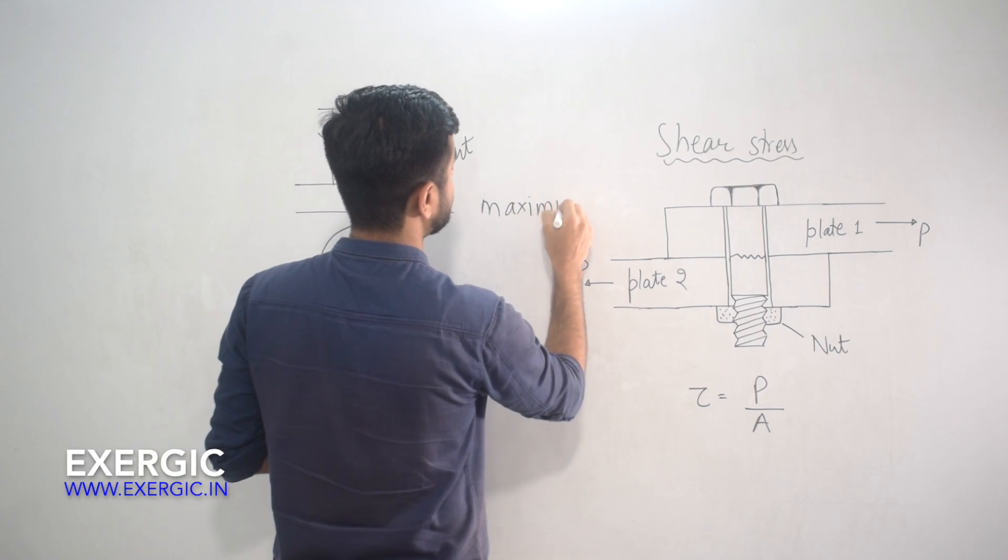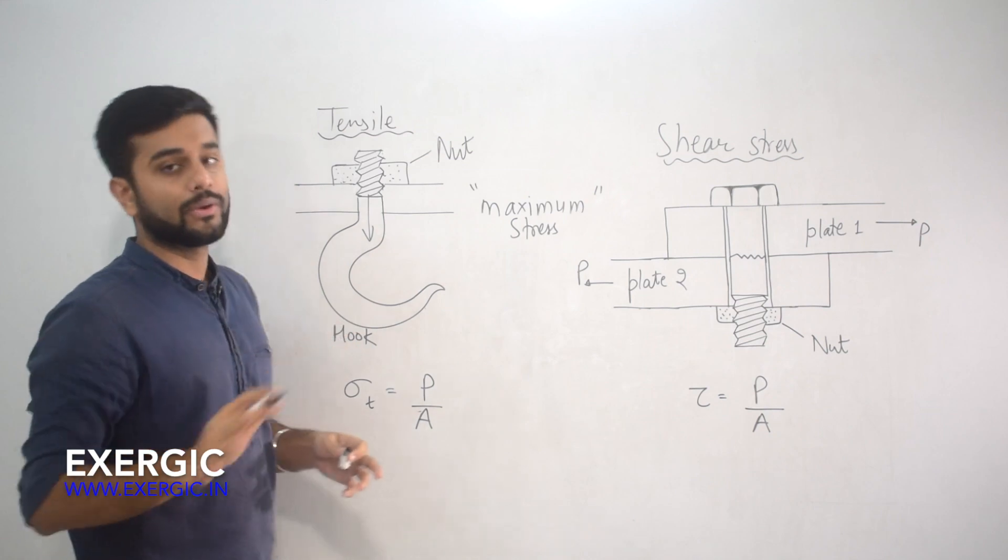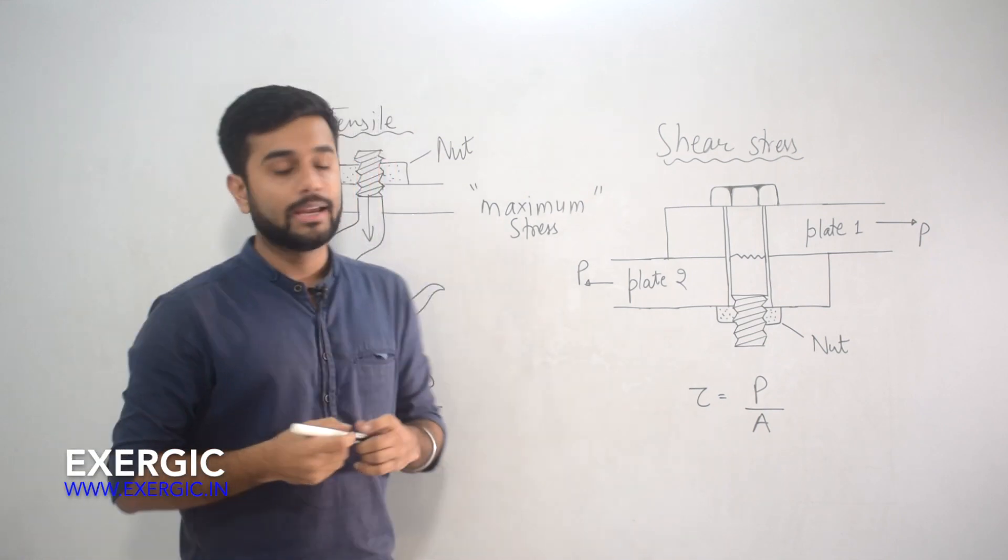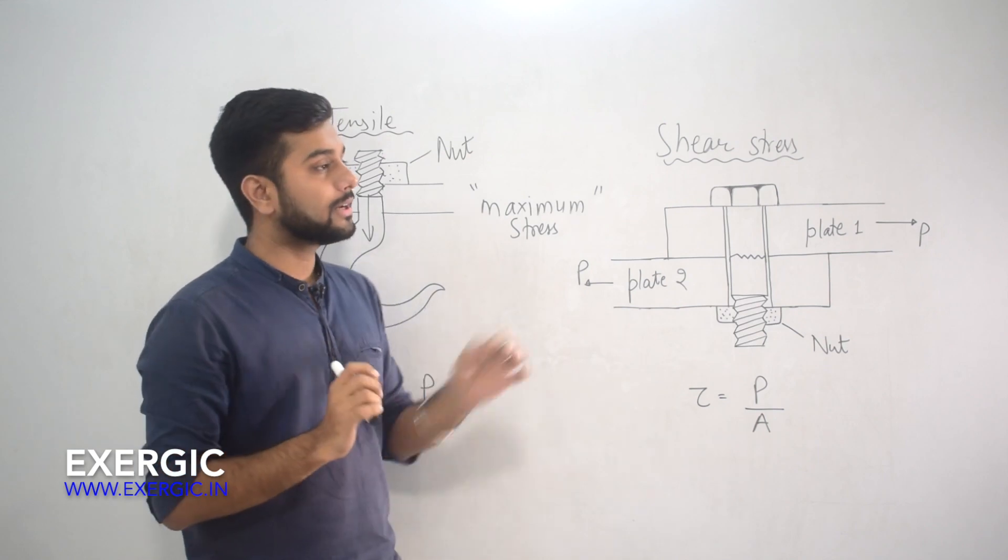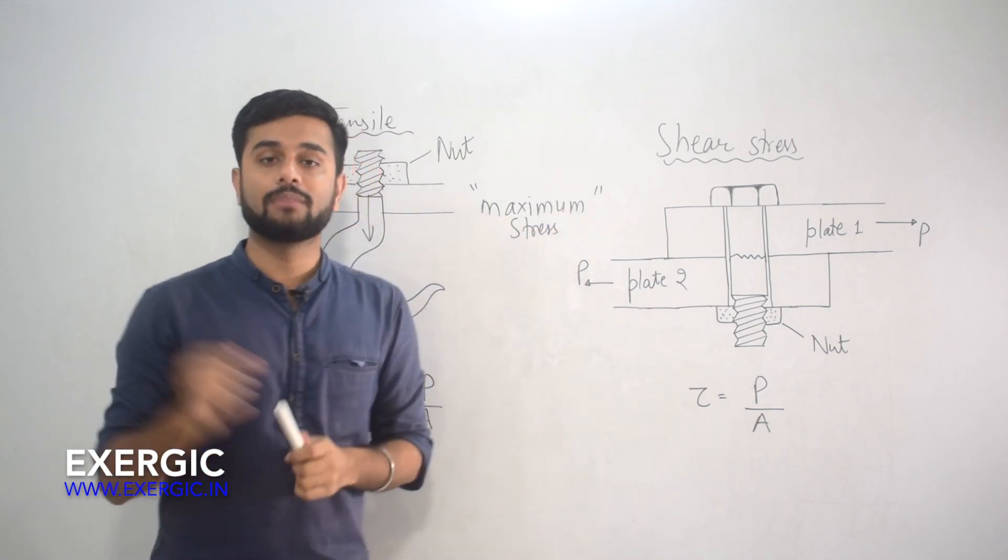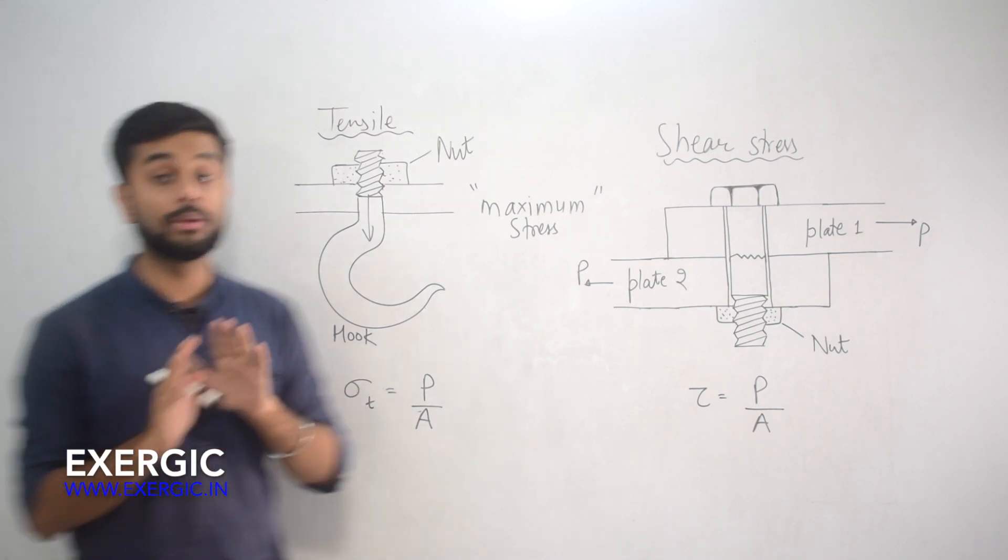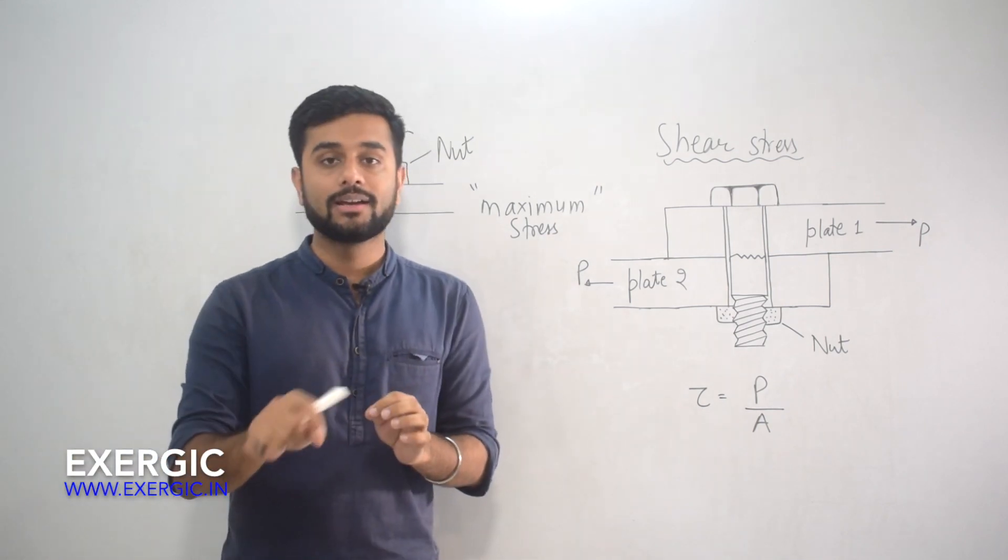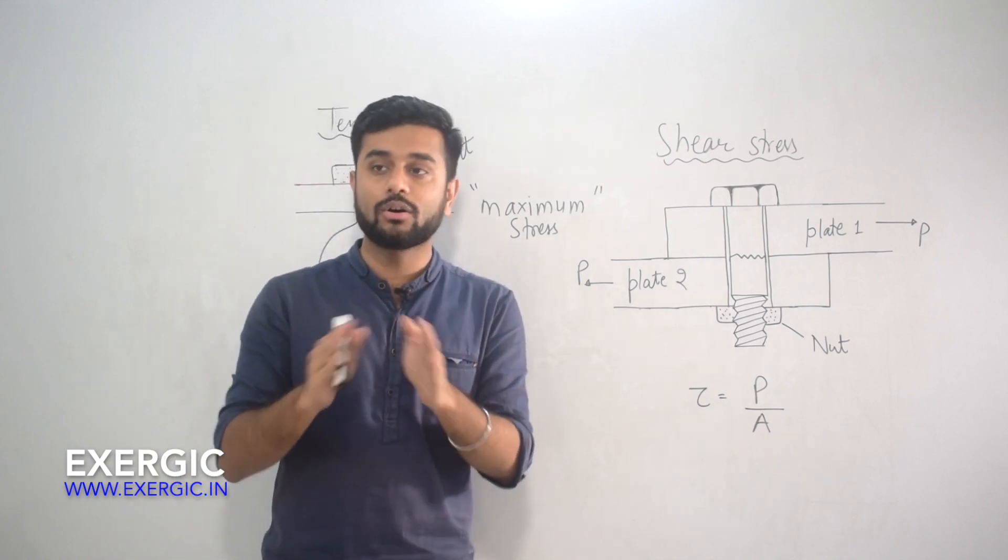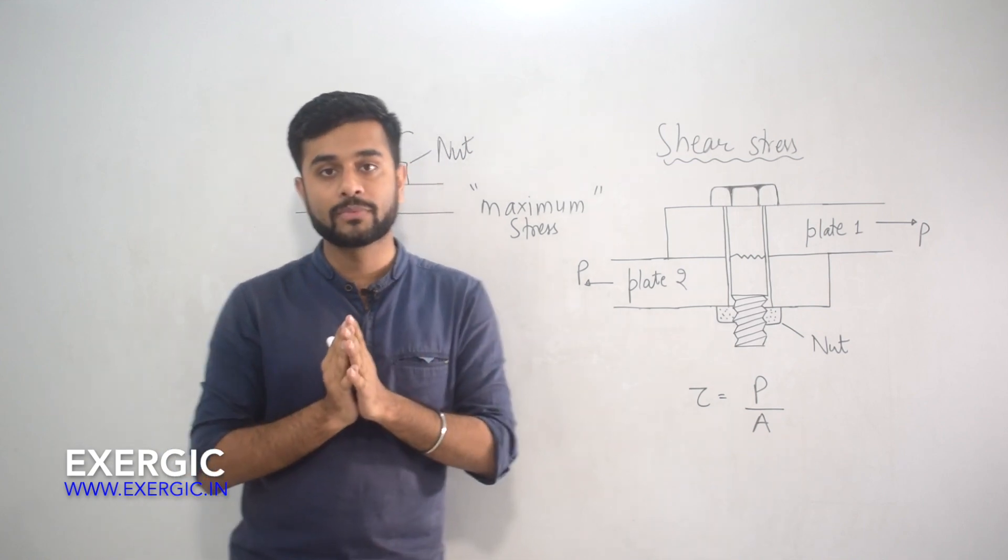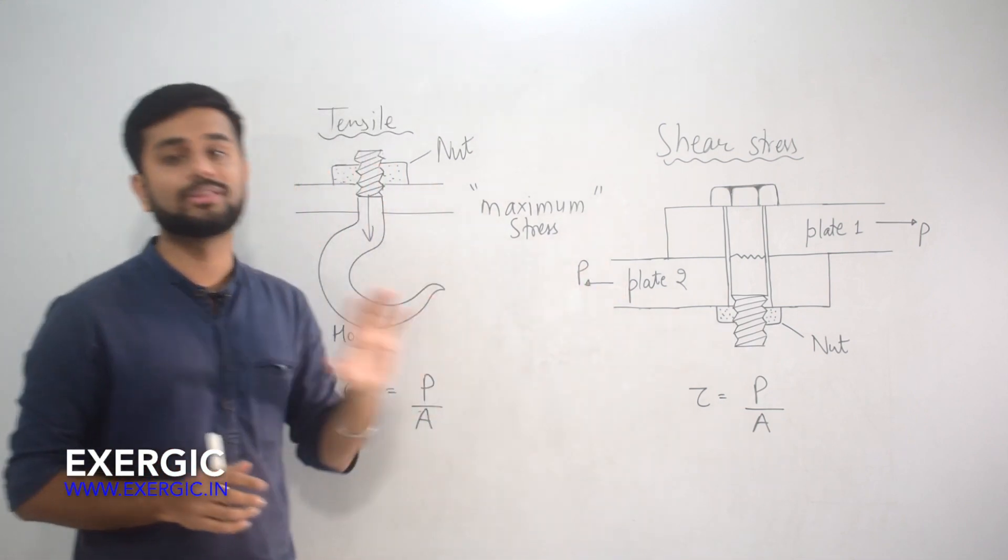Almost every question that has been asked in GATE mentioned determine the maximum stress. Now, whenever you see the term maximum, it comes to your mind that if stress needs to be maximum, then area needs to be minimum. That is why we will take core diameter. This is the mindset or the thought process of majority of aspirants, and this thought process is correct, but not for both the cases.